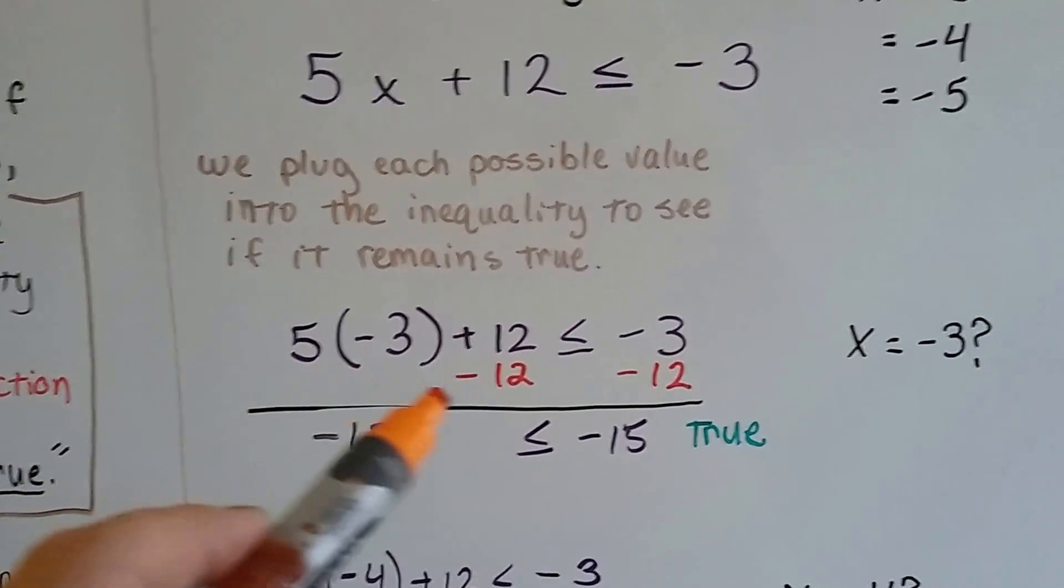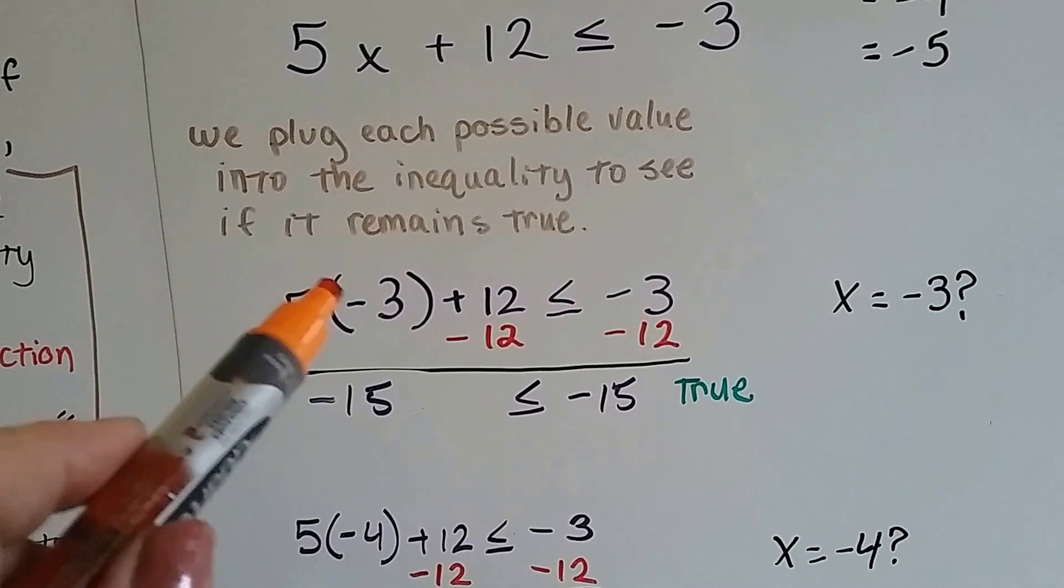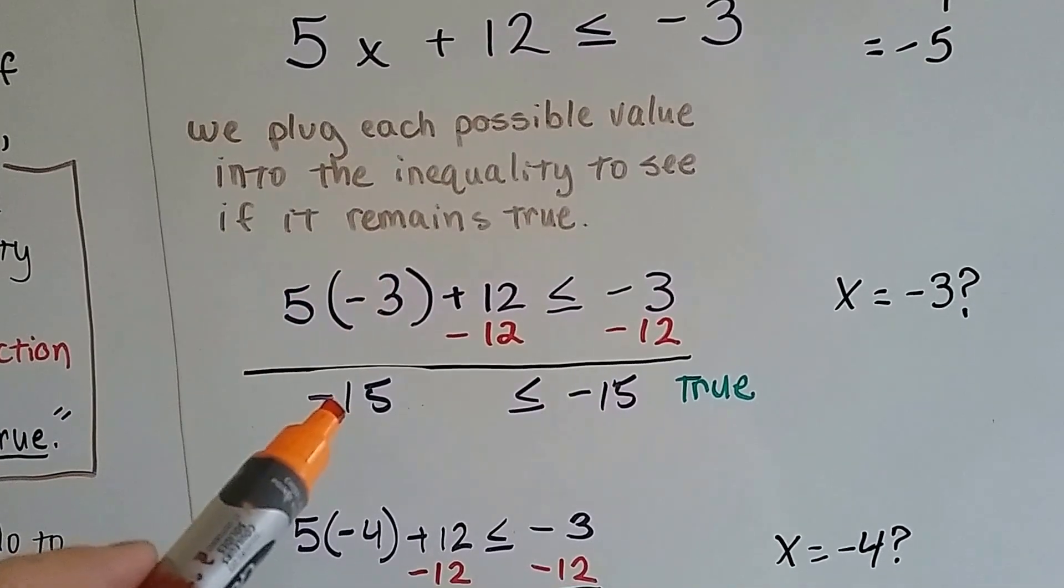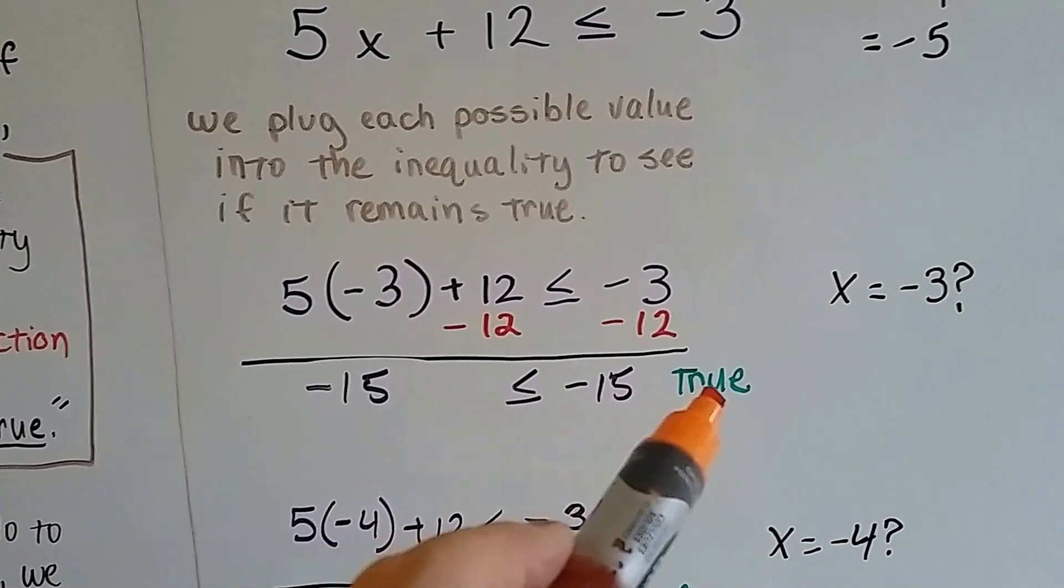So once we remove 12 from each side and we multiply 5 times negative 3, we get negative 15, and negative 15 is less than or equal to negative 15. It's true.